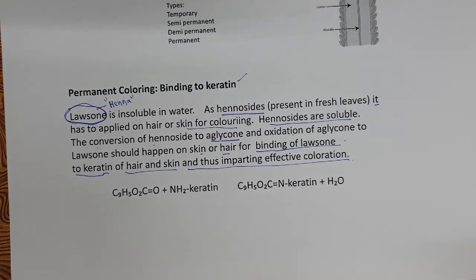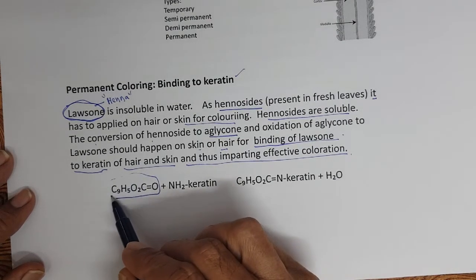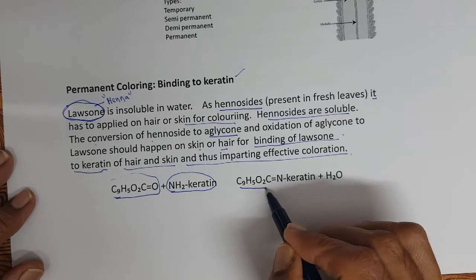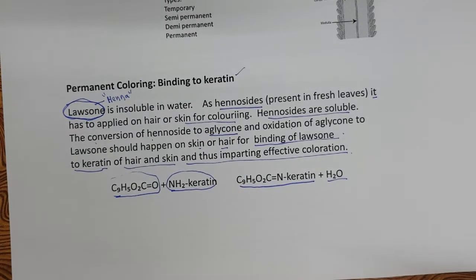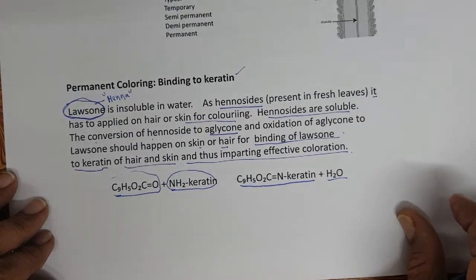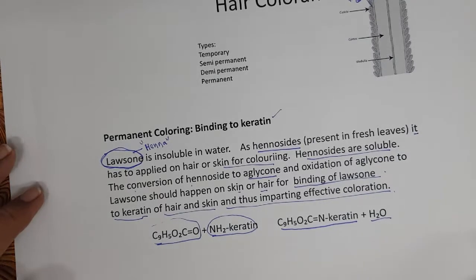So the glycoside content in Henna is very, very important to establish the coloring potency of the Henna. Lot of people make a mistake on this. The aglycone part binds with keratin, forming a keratin complex. This is one of the ways to permanently color the hair — binding to keratin. We will see further on this in the subsequent chapters.